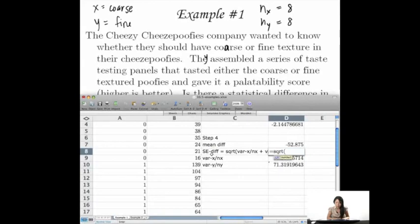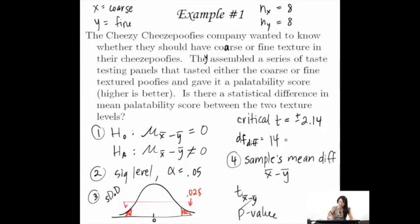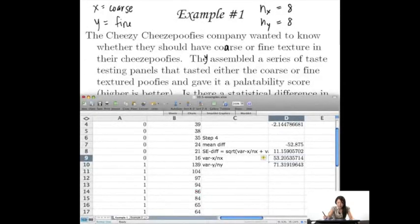So the square root of these two guys added together. And that is 11.16. So here, I'll just add this information. So the standard error of the difference equals 11.16.